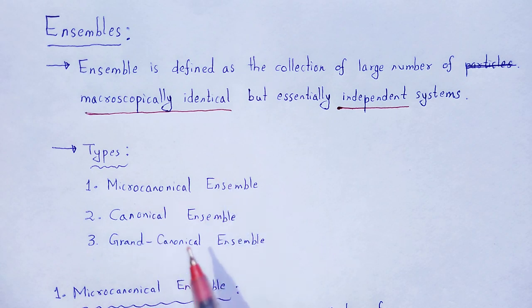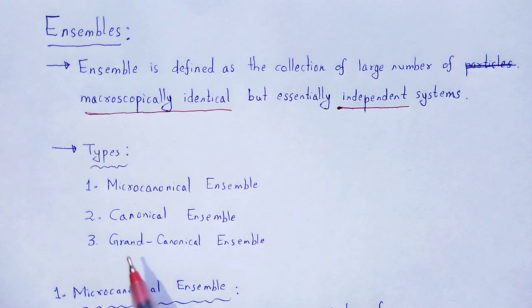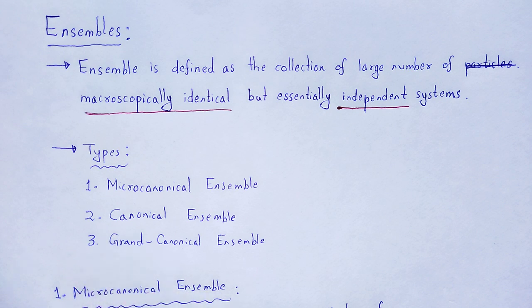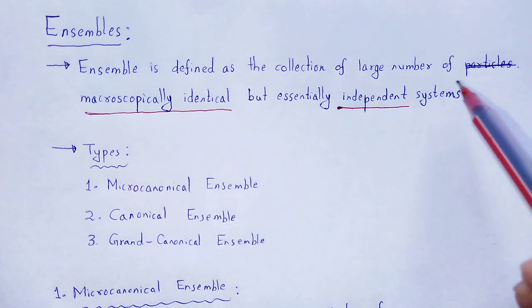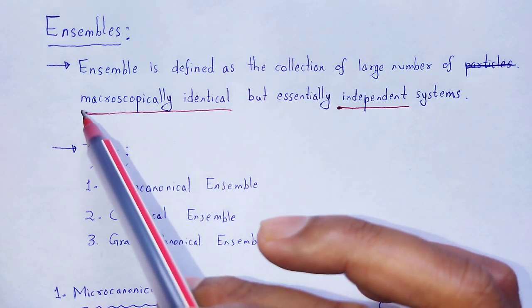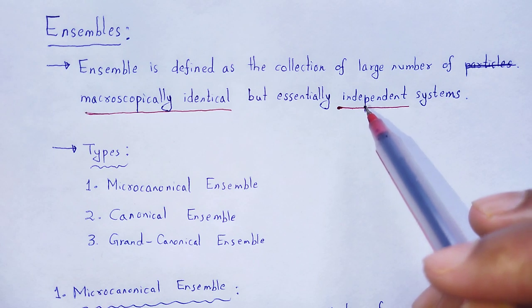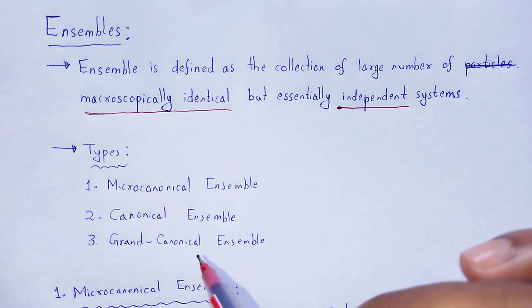The classification of ensembles — the types of ensembles. As there may be an infinite number of ensembles, but we discuss some basics: micro-canonical ensemble, canonical ensemble, and grand canonical ensemble. On the basis of the nature of the systems — that is macroscopically identical and independent — on that basis the ensembles are classified. We discuss one by one.